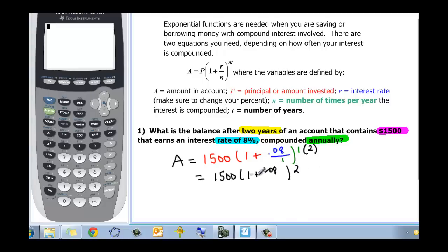So over here in my calculator, I'm going to put 1,500 times 1.08, 1 plus .08, and then carat 2 tells us that after two years, we have in our account $1,749.60 after two years.